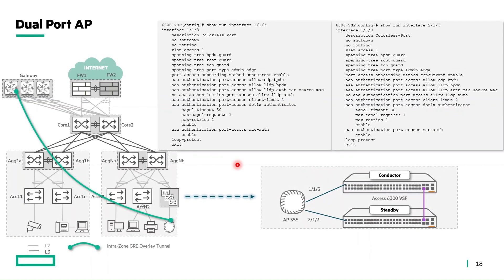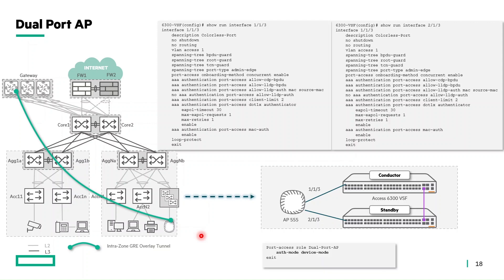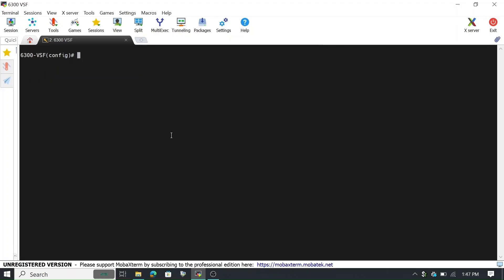For this demo, a three-layer topology is used where the access switch is connected to aggregation and core, and APs are connected to the access switch. The access switch is a two-member 6300 VSF stack, and the AP is an AP555 dual port AP. Port E0 of the AP is connected to port 1/1/3 of the conductor, and port E1 is connected to port 2/1/3 of the standby switch. This is a purely colorless port configuration applied to both dual port connected AP ports. The recommended auth mode for dual port APs is device mode only — client mode cannot be used.